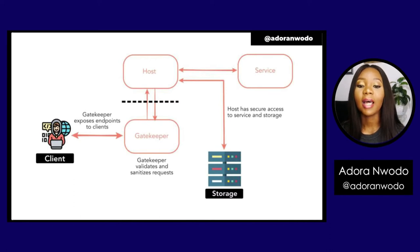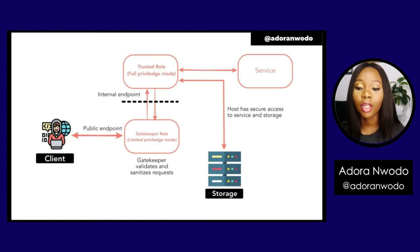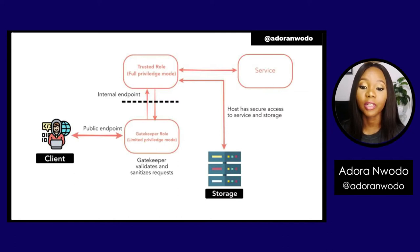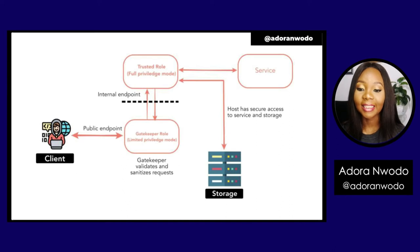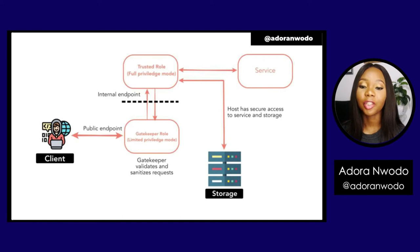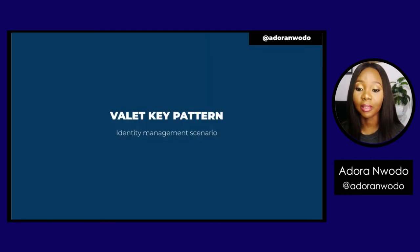Based on that validation, the gatekeeper then calls the host, which accesses the data and services. In practice, you can have a gatekeeper role with limited privileges and a trusted role with full privileges. The gatekeeper role exposes a public endpoint; once the client calls it, the request is sanitized and validated, and then the internal endpoint is called to reach the actual service.